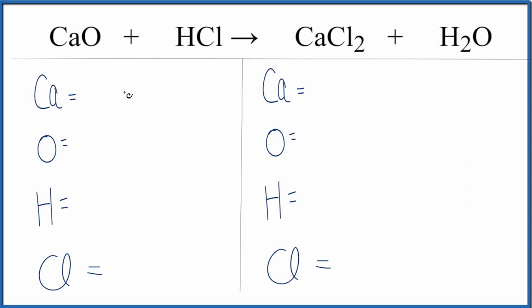Let's count the atoms up on each side so we can balance it. We have one calcium, one oxygen, one hydrogen, and then one chlorine.